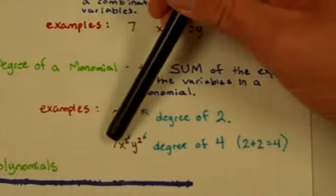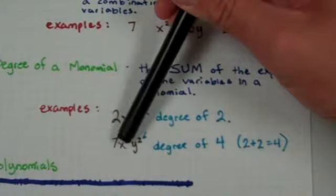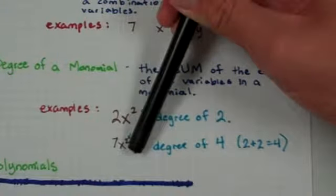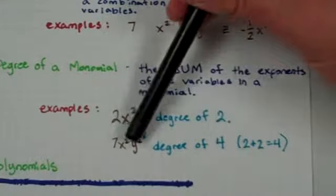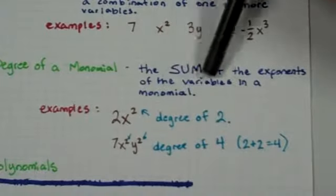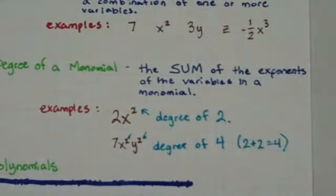Now if we had something like 7x squared y squared there's a 2 exponent on the x, a 2 on the y. So it has a total degree of 4. The 2 and 2 make 4. Remember because it's the sum of the exponents.